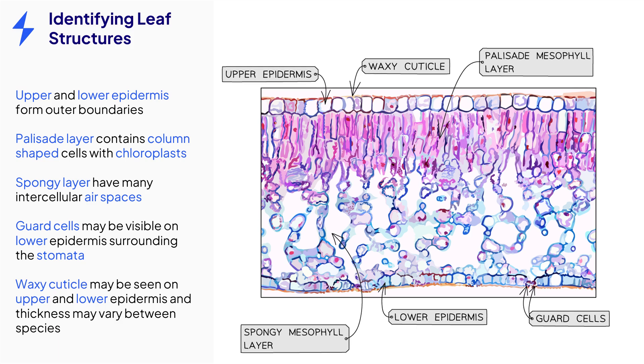Lastly, the waxy cuticle may be visible as a definite layer on top of the upper epidermis and sometimes the lower epidermis. The appearance and thickness of the cuticle may vary depending on the species of plant that is being viewed, but it will be recognizable by the lack of cells in this layer.